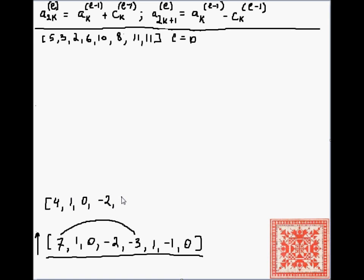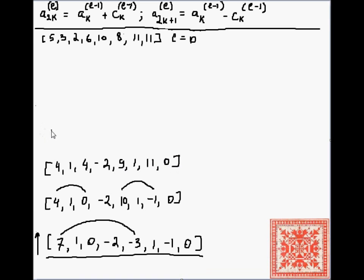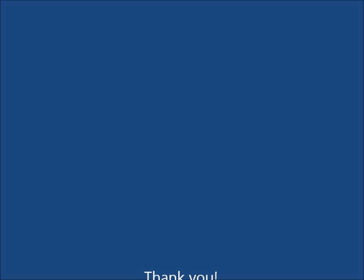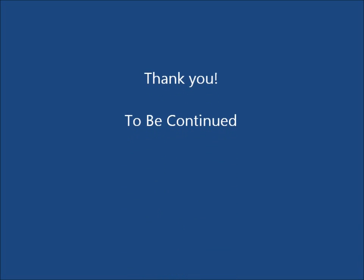Now let's apply the inverse in-place fast Haar wavelet transform. We start with gap size four, then gap size two, then gap size one, restoring the original sample at each step. The original sample is fully restored. In the next screencast we'll continue with the Java source code.